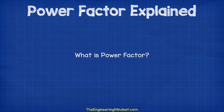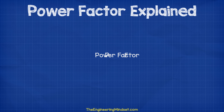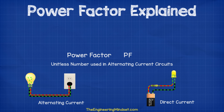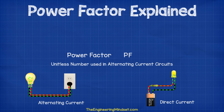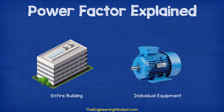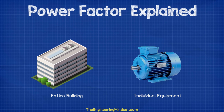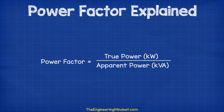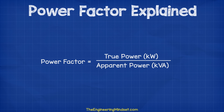So what is power factor? Power factor is a unitless number used in alternating current circuits. It can be used to refer to a single piece of equipment such as an induction motor, or for the electricity consumption of an entire building. In either case, it represents the ratio between true power and apparent power, the formula being PF equals KW divided by KVA.